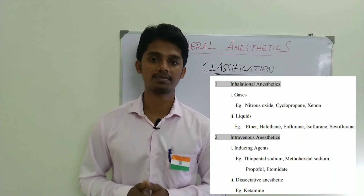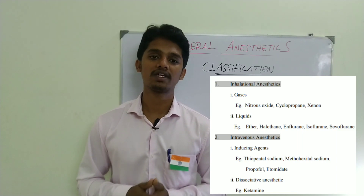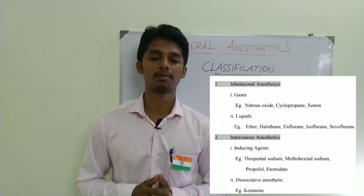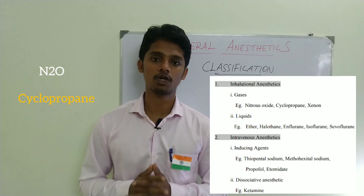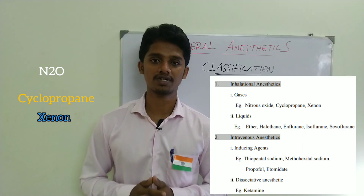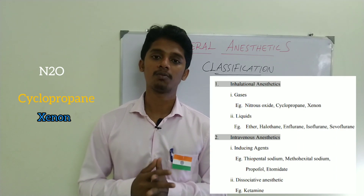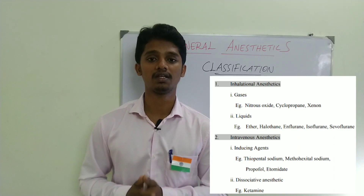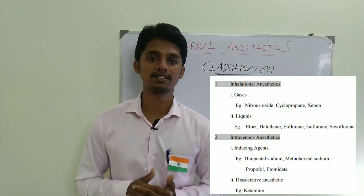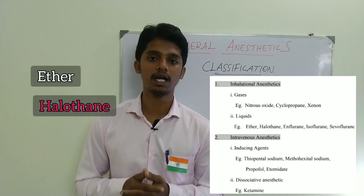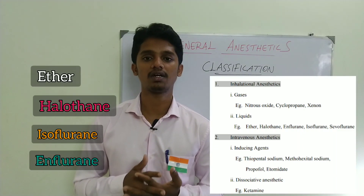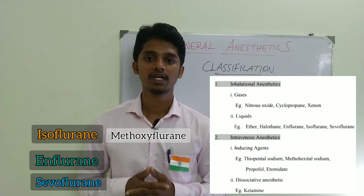For inhalational anesthetics, there are two types. One is gases — for example, nitrous oxide, cyclopropane, and xenon, which are available only in gaseous form. The other type is liquids — for example, ether, halothane, isoflurane, enflurane, sevoflurane, and methoxyflurane.